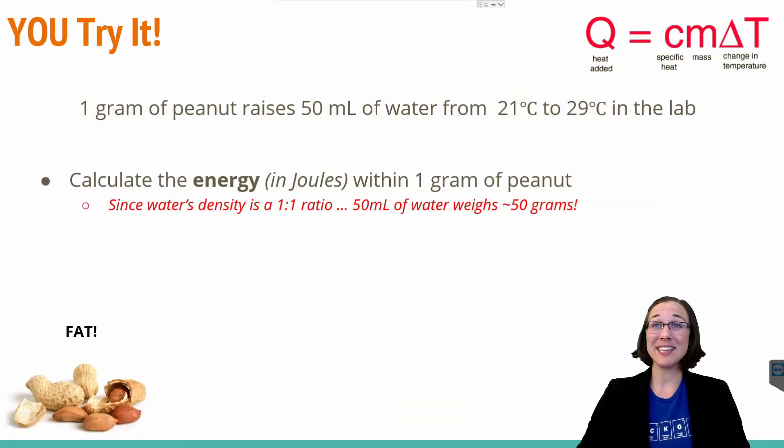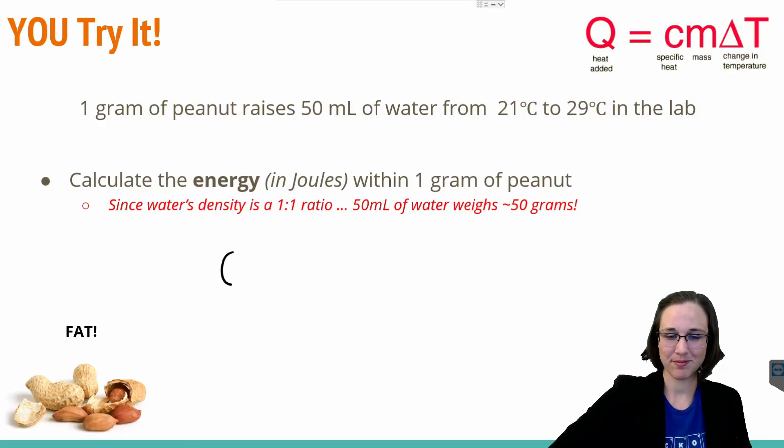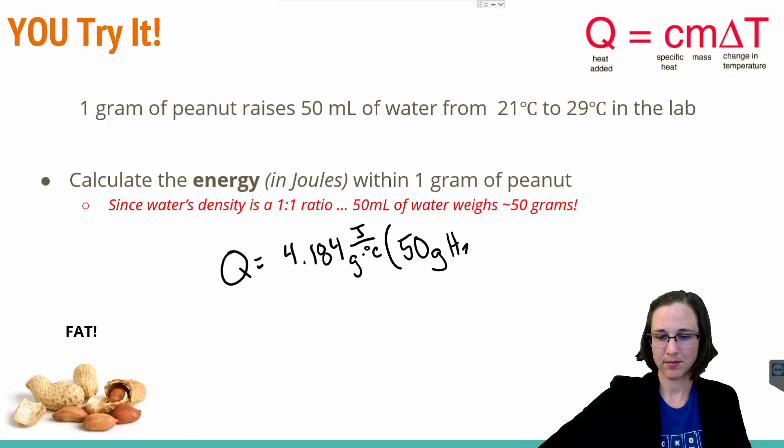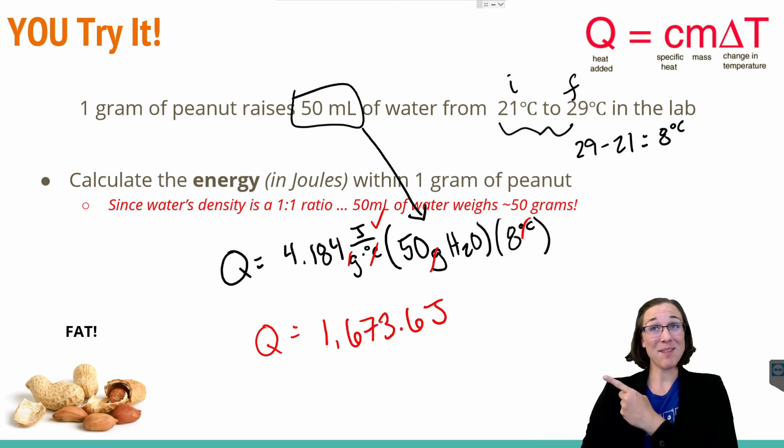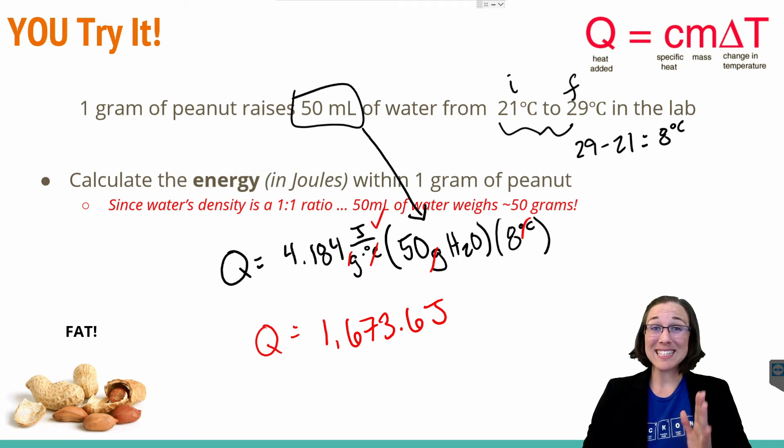We can then take this number and convert it to calories. But before we do that, go ahead and give this equation a try using one gram of peanut instead to represent fat calories instead of starch calories or sugar calories from earlier. Ready, go! Let's check your math. You should have gotten that much energy for your one gram of peanut. Notice that it's literally double the amount of one gram of potato. This just goes to show that there's more energy extracted from the fat than there is from the starch.